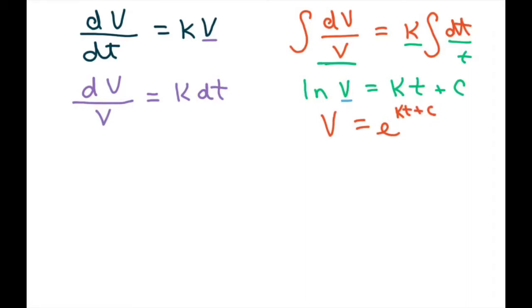Now, using the rules of exponents, we can write this as v equals e to the kt power times e to the c power. And since this is a constant, I'm just going to let this e to the little c equals big C constant. And write this as v equals C e to the kt.